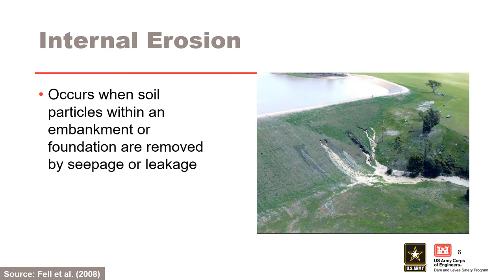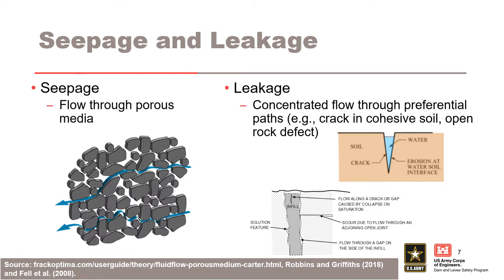Internal erosion occurs when soil particles within an embankment or foundation are removed by seepage or leakage — it requires a soil particle that can move and somewhere for it to go. Seepage describes flow through a porous media, such as flow through the void space of a coarse-grained soil, whereas leakage describes concentrated flow through preferential open pathways. These open pathways or defects can occur in soil as a crack, gap, or hydraulic fracture, or in rock as an open joint, seam, fault, shear zone, bedding plane, solution feature, or other discontinuity.